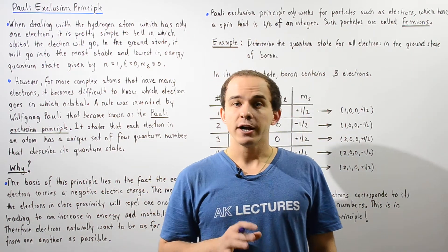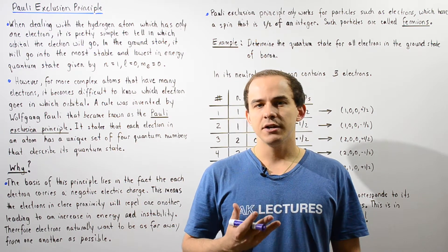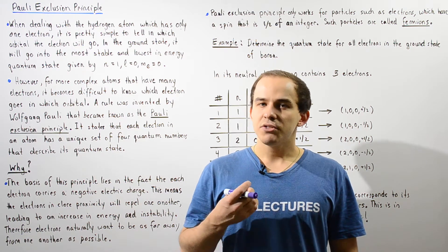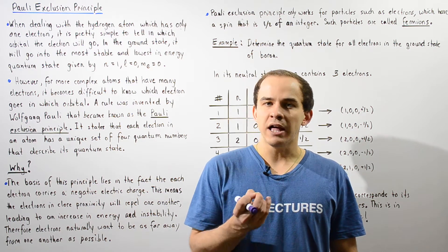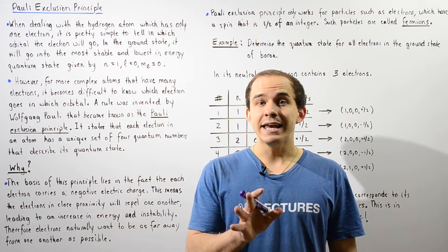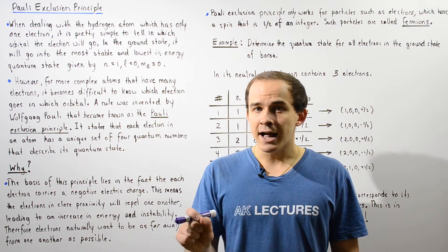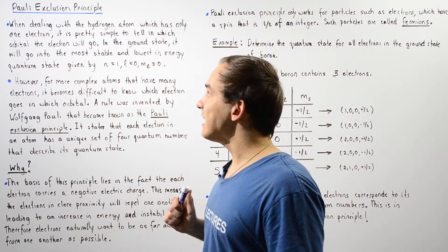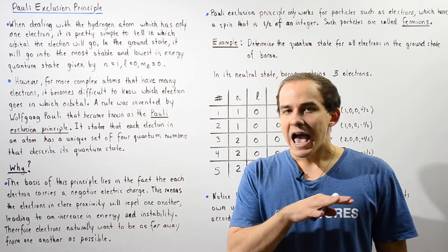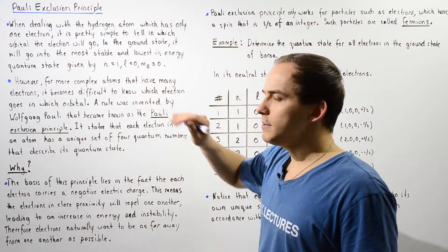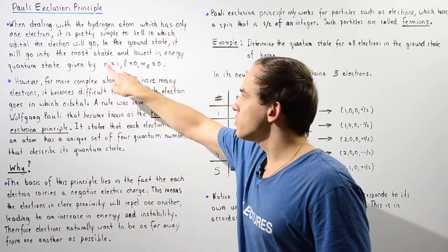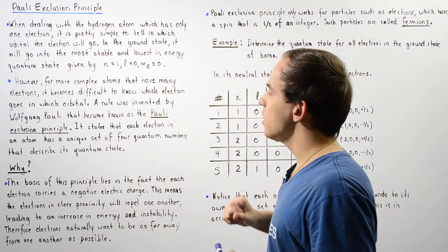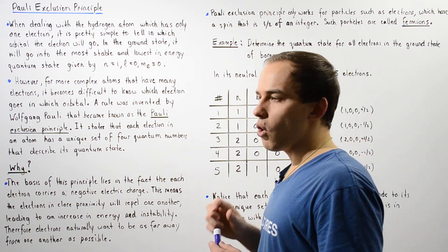So far in our discussion on the quantum mechanical theory of the atom, we spoke about the simplest type of atom, namely the hydrogen atom. The hydrogen atom only has a single electron in its neutral state, and in its ground state it's very easy to tell where that electron will go. The electron goes into the most stable and lowest energy quantum state, given by the principal quantum number n=1, the orbital quantum number l=0, and the magnetic quantum number ml=0.